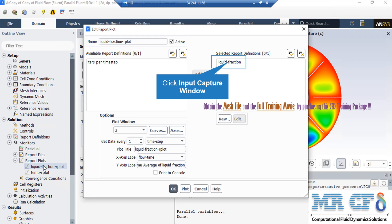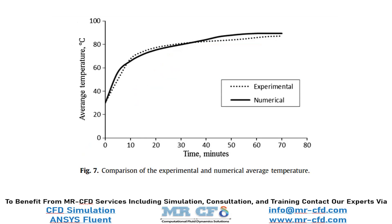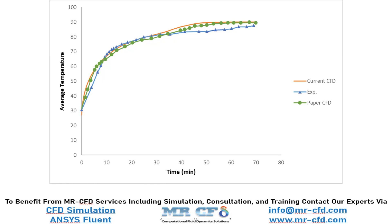In order to plot the liquid fraction in this project, you just have to go under the report plots and then double-click on the liquid fraction plot. After that, under the selected report definition, we select the liquid fraction report and then click on plot. As you can see in this slide, we have clearly validated our CFD simulation results with the paper results, and there is very little difference between ours and the paper. As our second validation, we have selected figure 7 of the paper, which gives the graph of average temperature over time. Again, in this slide, you can easily see that our CFD simulation data fits with the data provided in the paper.